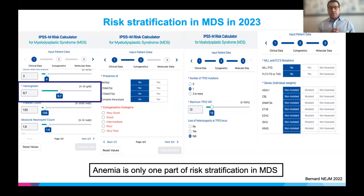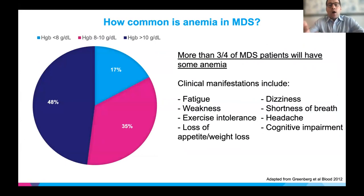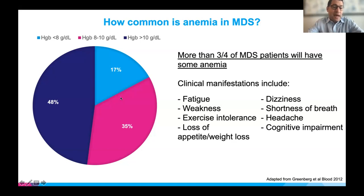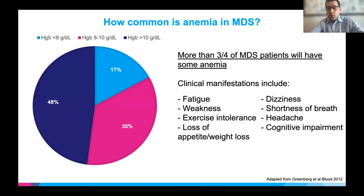Anemia is an important topic because it has similarities across the risk continuum and can have significant impact. More than three-fourths of patients will have some degree of anemia. In this large study of MDS patients, 52% had a hemoglobin less than 10, and 15–20% had a hemoglobin less than 8, requiring red blood cell transfusions. Only about a fourth of MDS patients will have no evidence of anemia, their disease manifested by other cytopenias like thrombocytopenia or neutropenia.